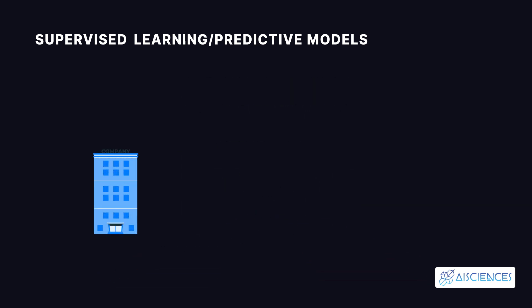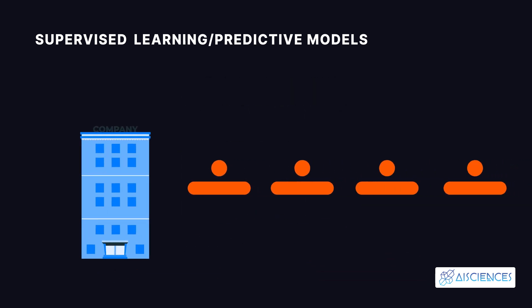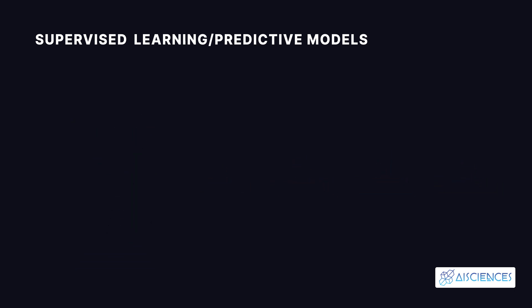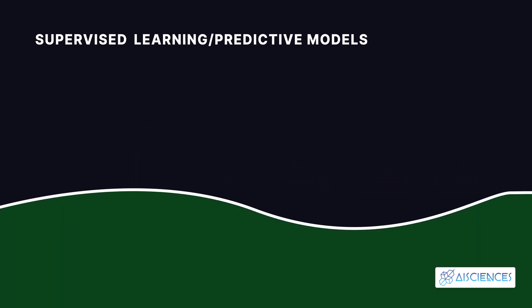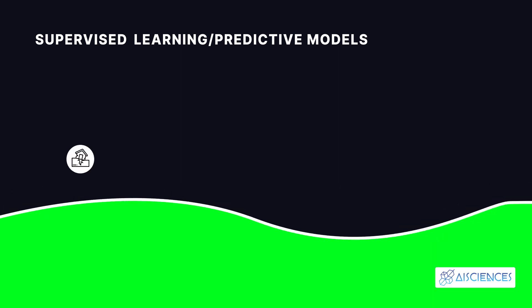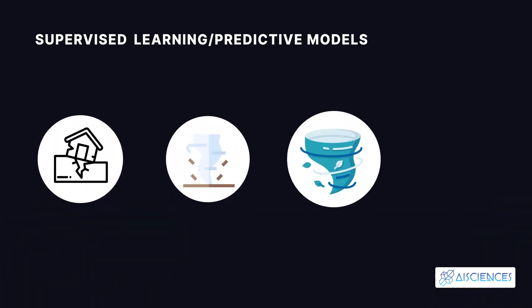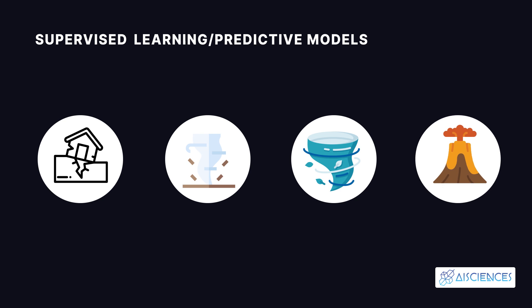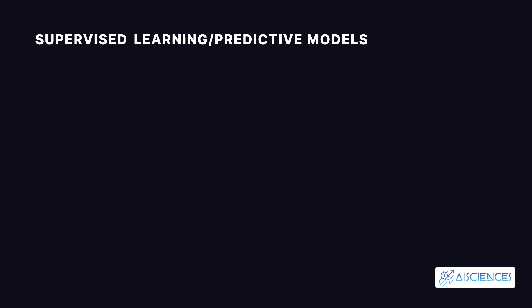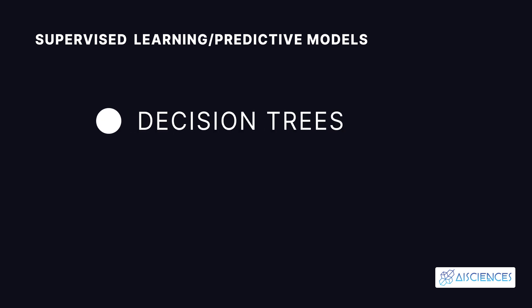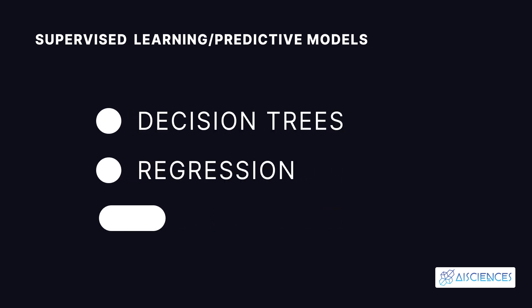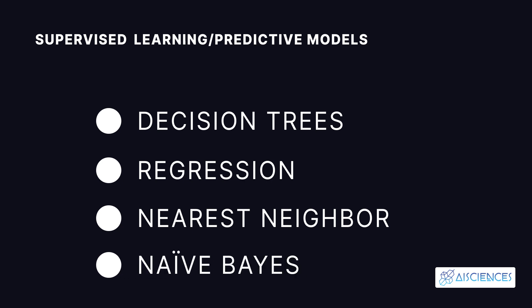A marketing company uses supervised learning to determine which customers are most likely to churn. Supervised learning can also be used to predict the chances of natural disasters — such as earthquakes, cyclones, tornadoes, and volcanic eruptions — for determining total insurance value. Some common supervised learning algorithms include decision trees, regression, nearest neighbor, and naive Bayes.